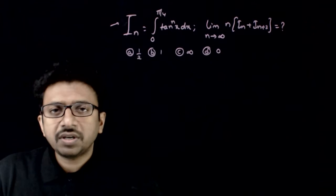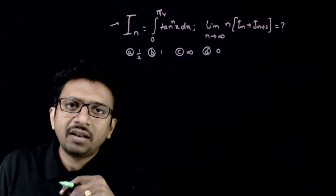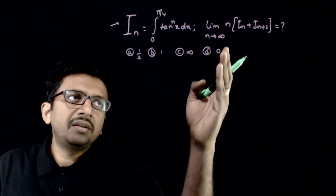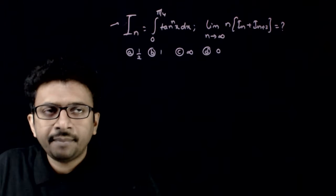Welcome students. In this question, given that I_n equals the integral from 0 to pi by 4 of tan to the power n dx, you are asked to find the limit as n tends to infinity of n times I_n plus I_(n+2).